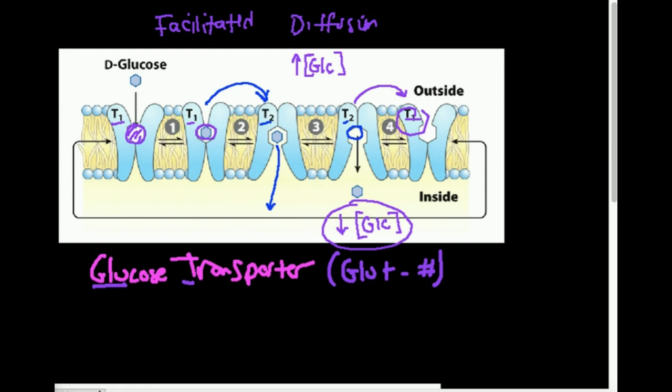There are different glucose transporters. They're all abbreviated GLUT and they're given a number designation. For example, GLUT-2 would be used for a different function than GLUT-4 and so forth. And in fact, the GLUT transporter that you have on your muscle cells, skeletal muscle, is different than the one that's on your pancreas or your liver.